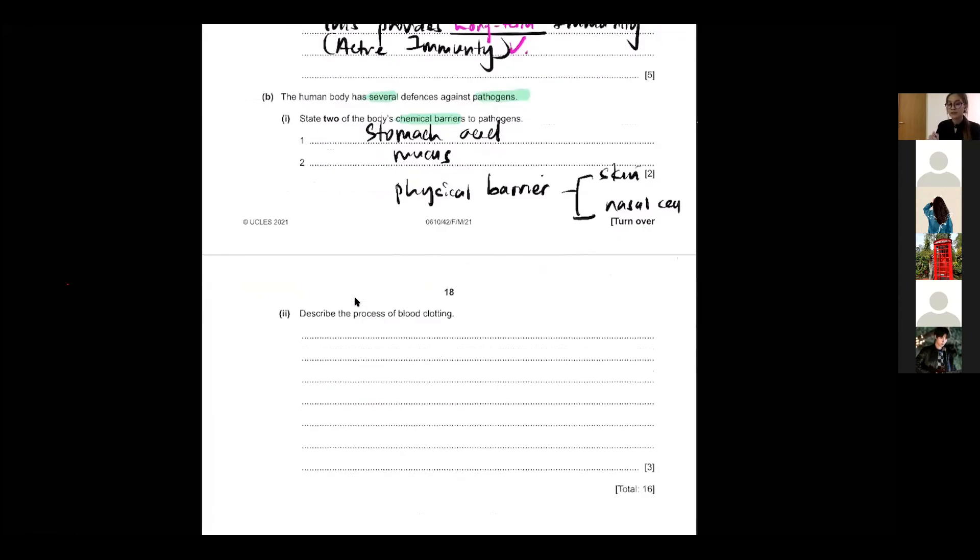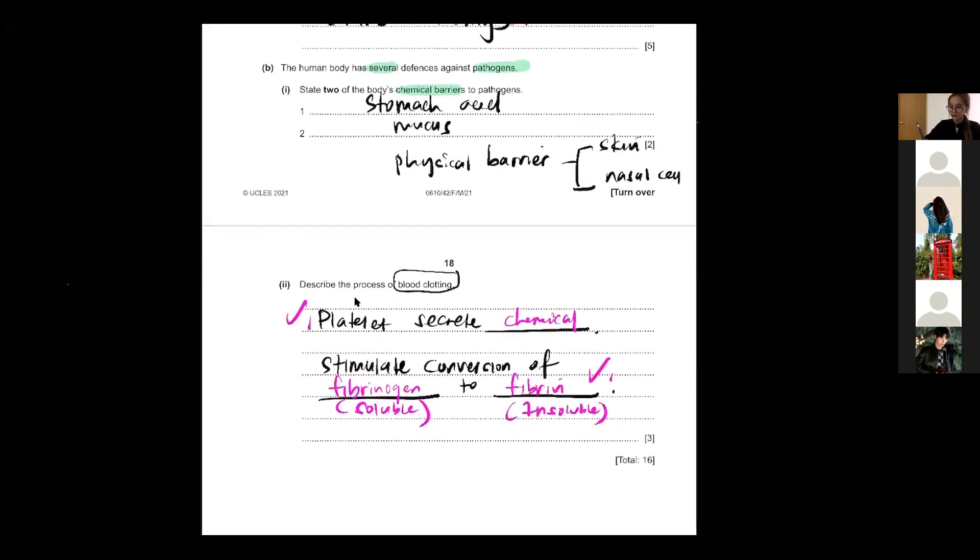Very good. Next one, describe the process of blood clotting. This is very straightforward, people. Write it down. You have to mention what? Platelets. So the platelets will secrete chemical. So what do we, what does it convert? Stimulate the conversion of fibrinogen to fibrin. Okay guys, a lot of you, yes thank you, soluble to insoluble. Thank you Jensen, correct, yes. So remember, fibrinogen is soluble. You want to make it insoluble, right? Not only it can check the wound, it can cover the wound. If you guys forget, the long one become the short one. The longer words become the shorter words. Fibrinogen become fibrin. Insoluble. Secret chemical. So if you mention platelets, you get one mark. You mention the conversion, you get two marks.